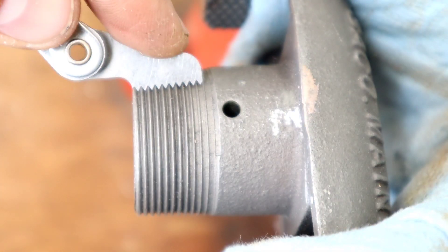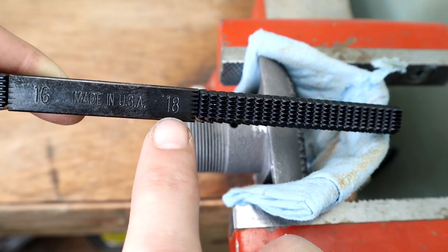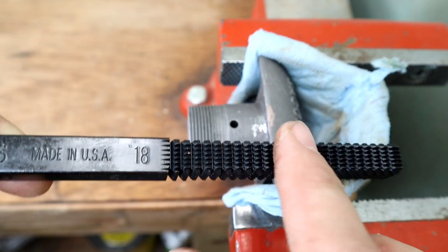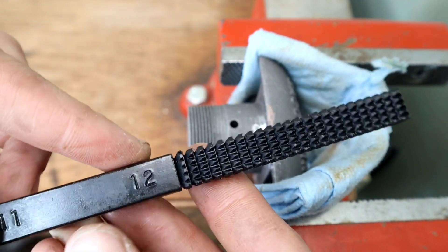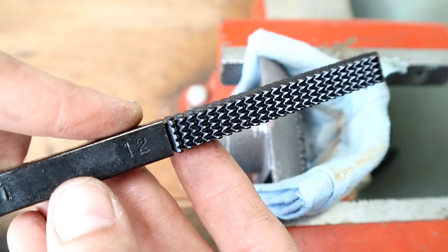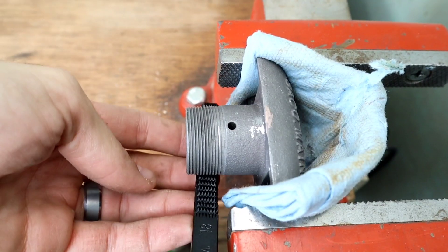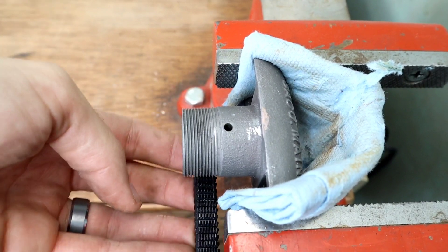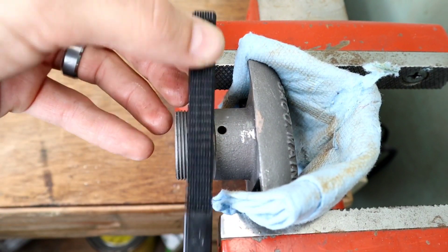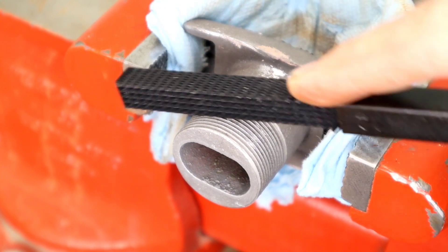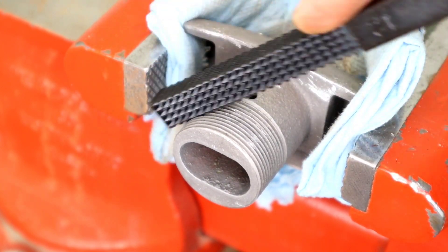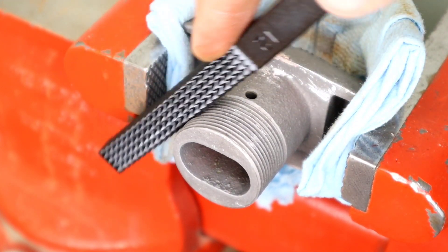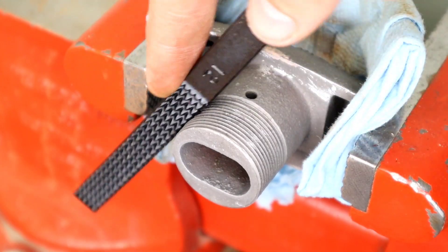Now for the threads. Use a thread pitch gauge to check the number of threads per inch. To restore the top of the threads, use a thread file with the correct size based on the leaf from the gauge, which was 18 here. Set the file into the threads and carefully work it around like a regular file. Be careful not to take away too much of the material because you can't get it back. And on a piece like this, that would be game over. In a pinch, you could also use a die, but they are far more aggressive and will likely take off too much material.